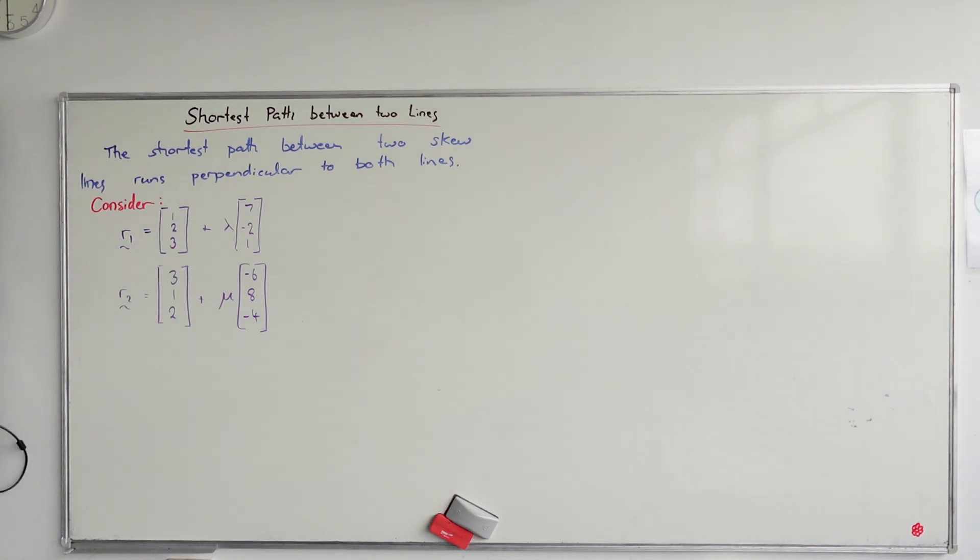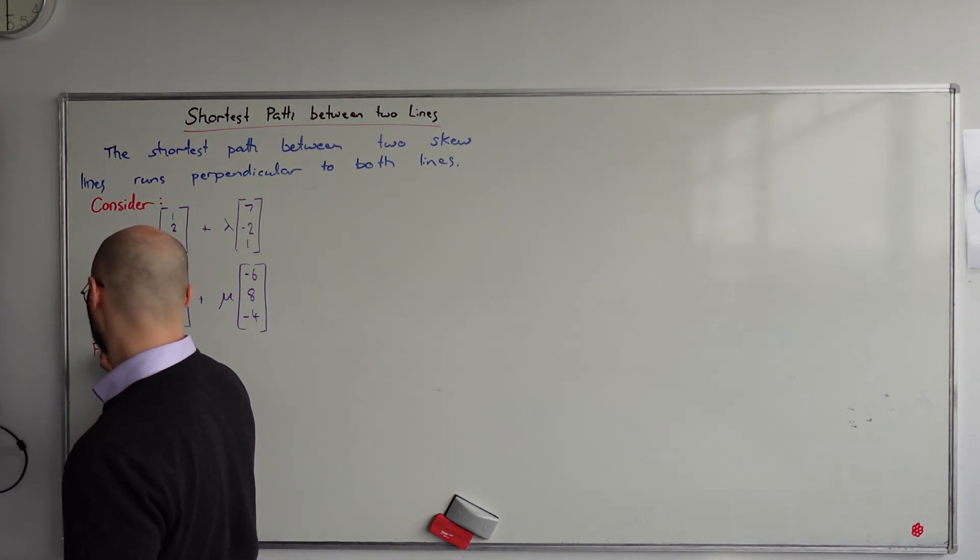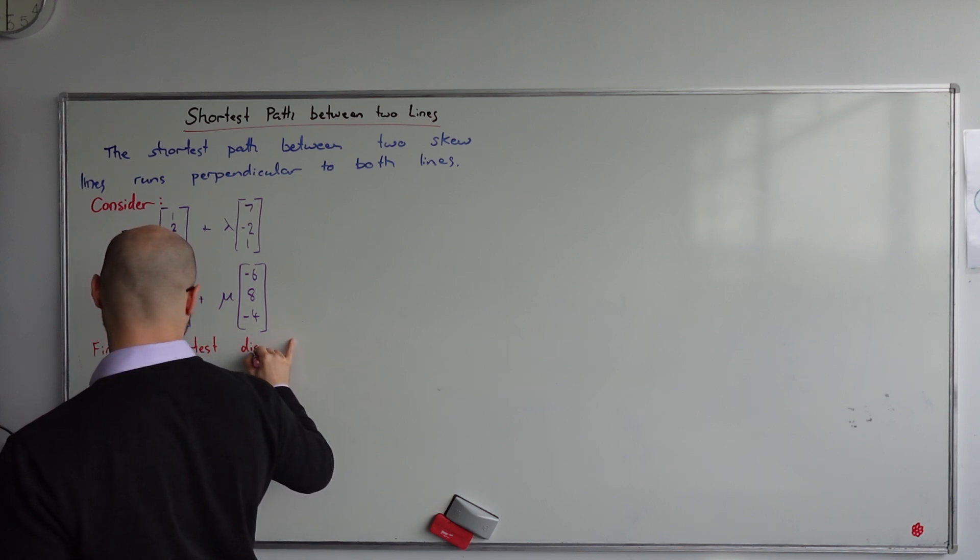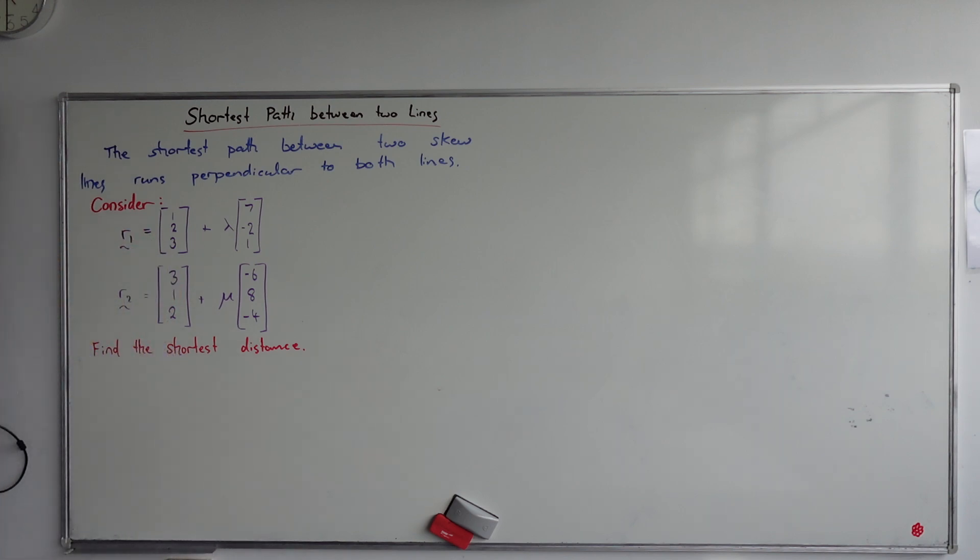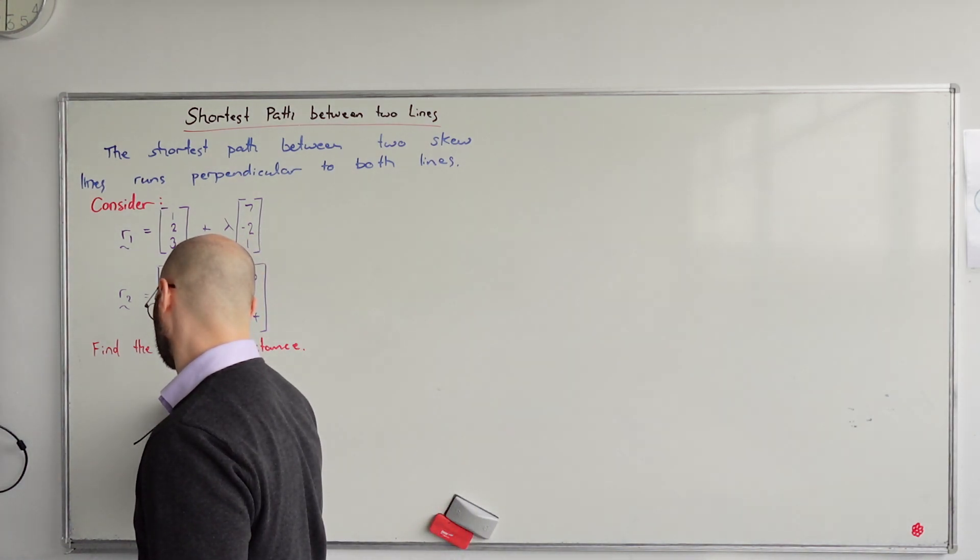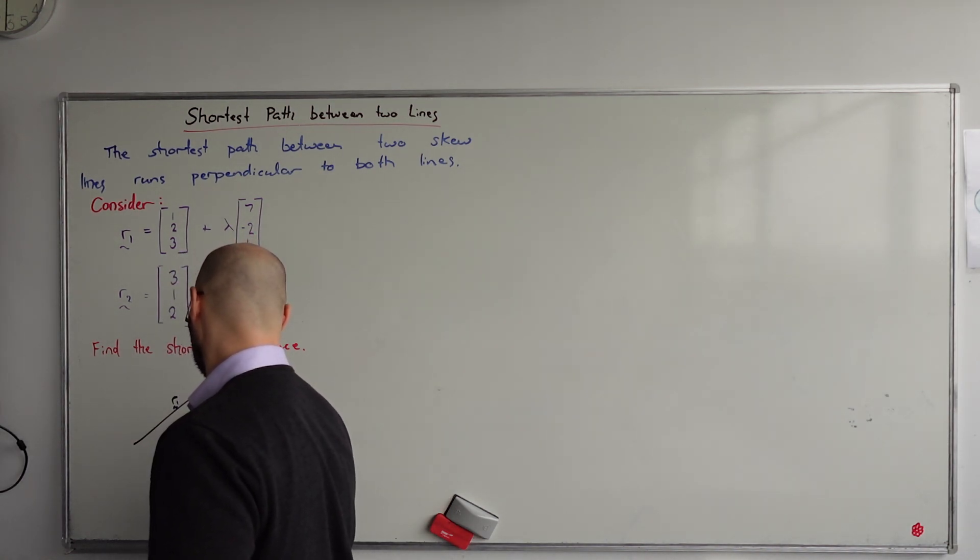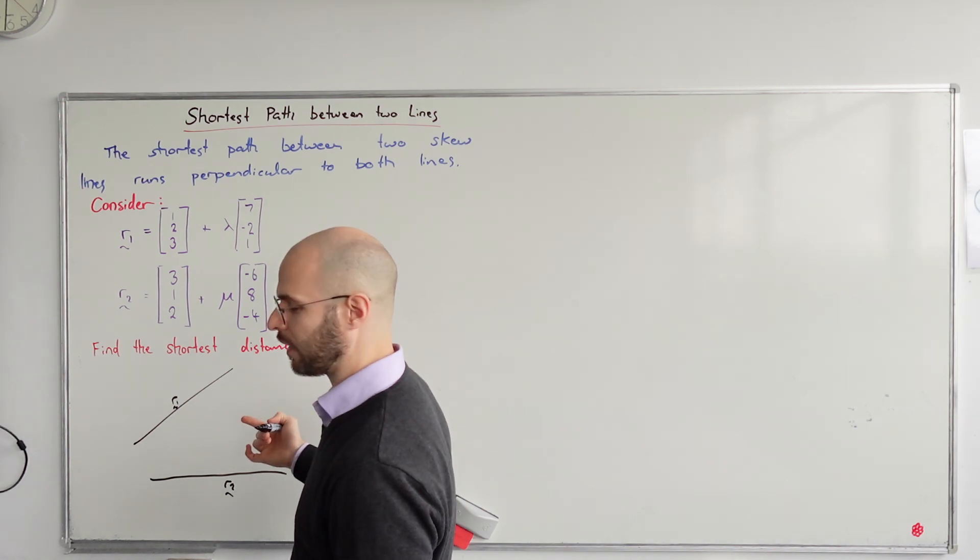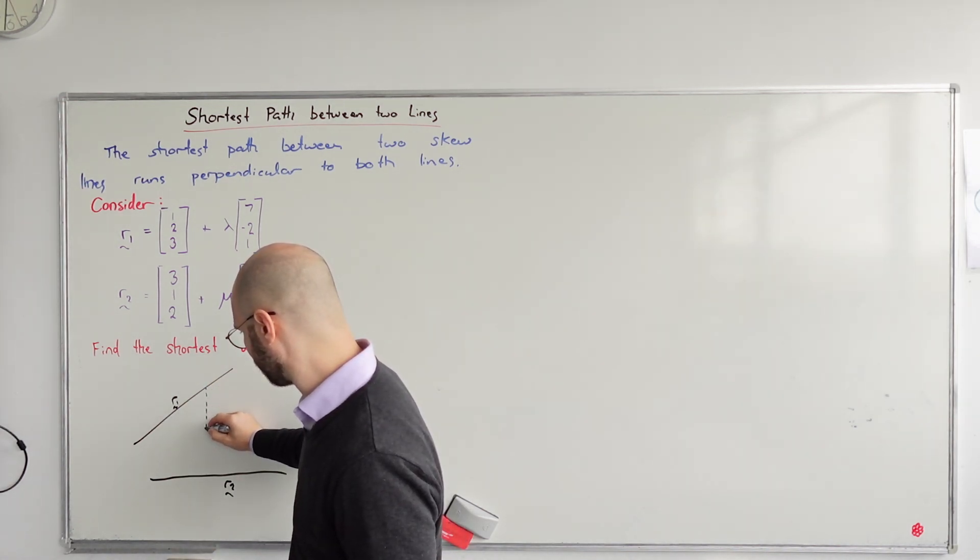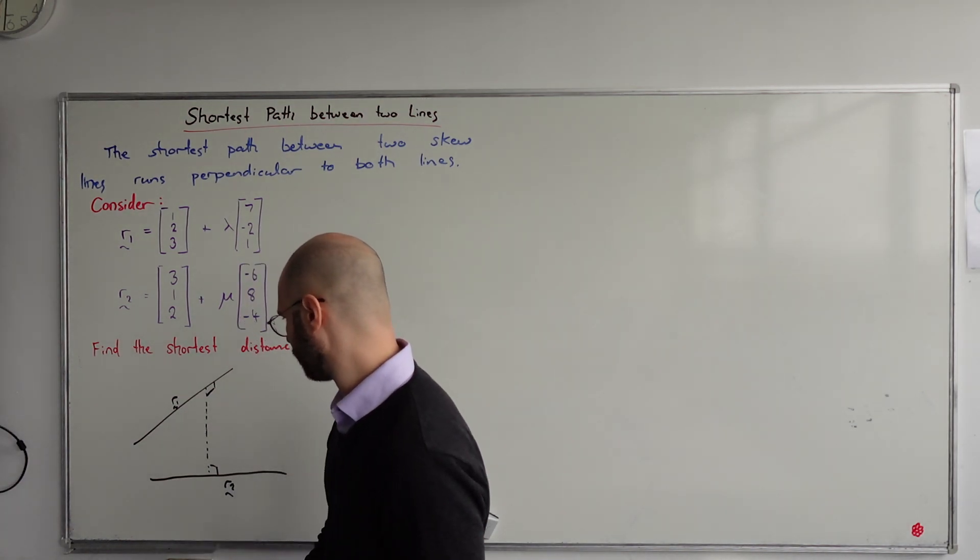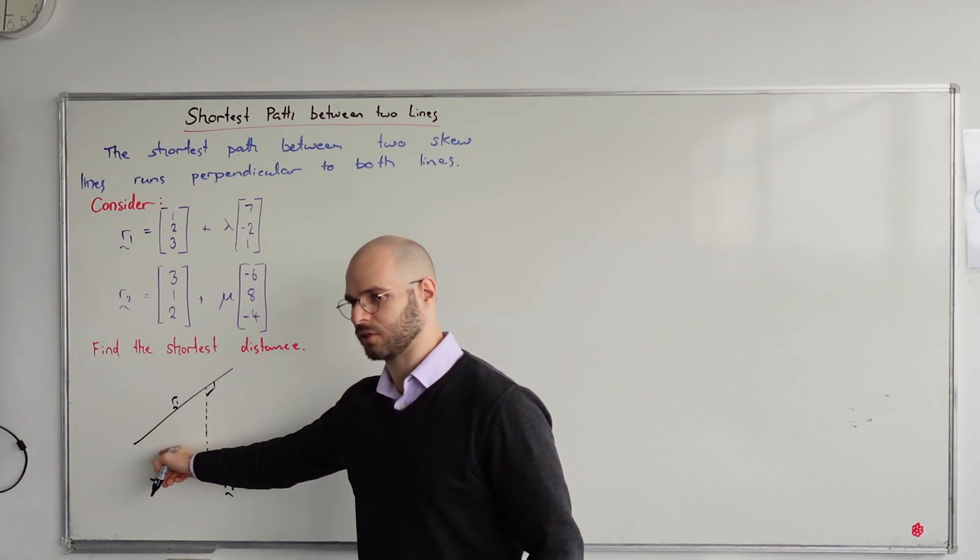I could go through all the algebra without any real understanding of why it is the way it is. Imagine this is line one and that's line two. Suppose we want to find the shortest distance. The shortest distance is where it's always perpendicular. That might look like the shortest distance but it's not because it's coming out of the board.